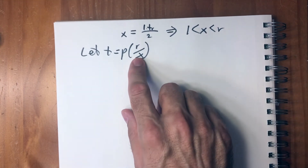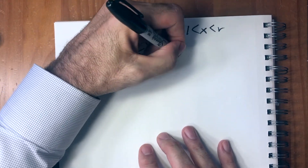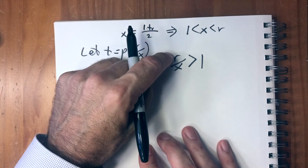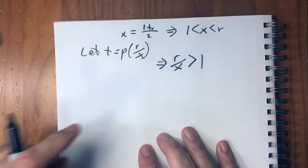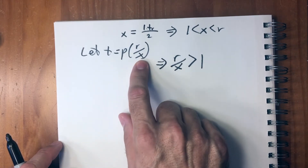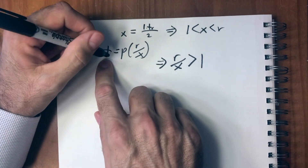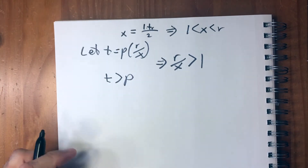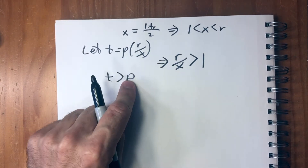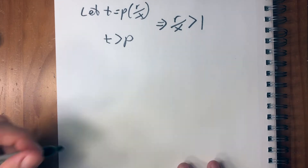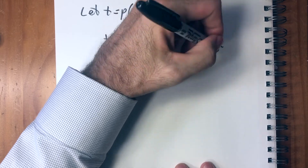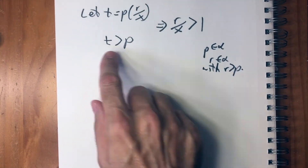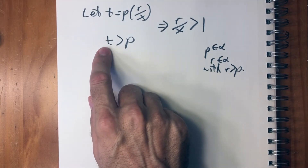Since x is less than r, r divided by x is greater than one — the numerator is bigger than the denominator. That means t equals p times something bigger than one, so t is greater than p. We're trying to prove property three: given p an element of beta, there's some t in beta with t greater than p. So t plays the role of the larger element, and now we need to show t is also in beta.